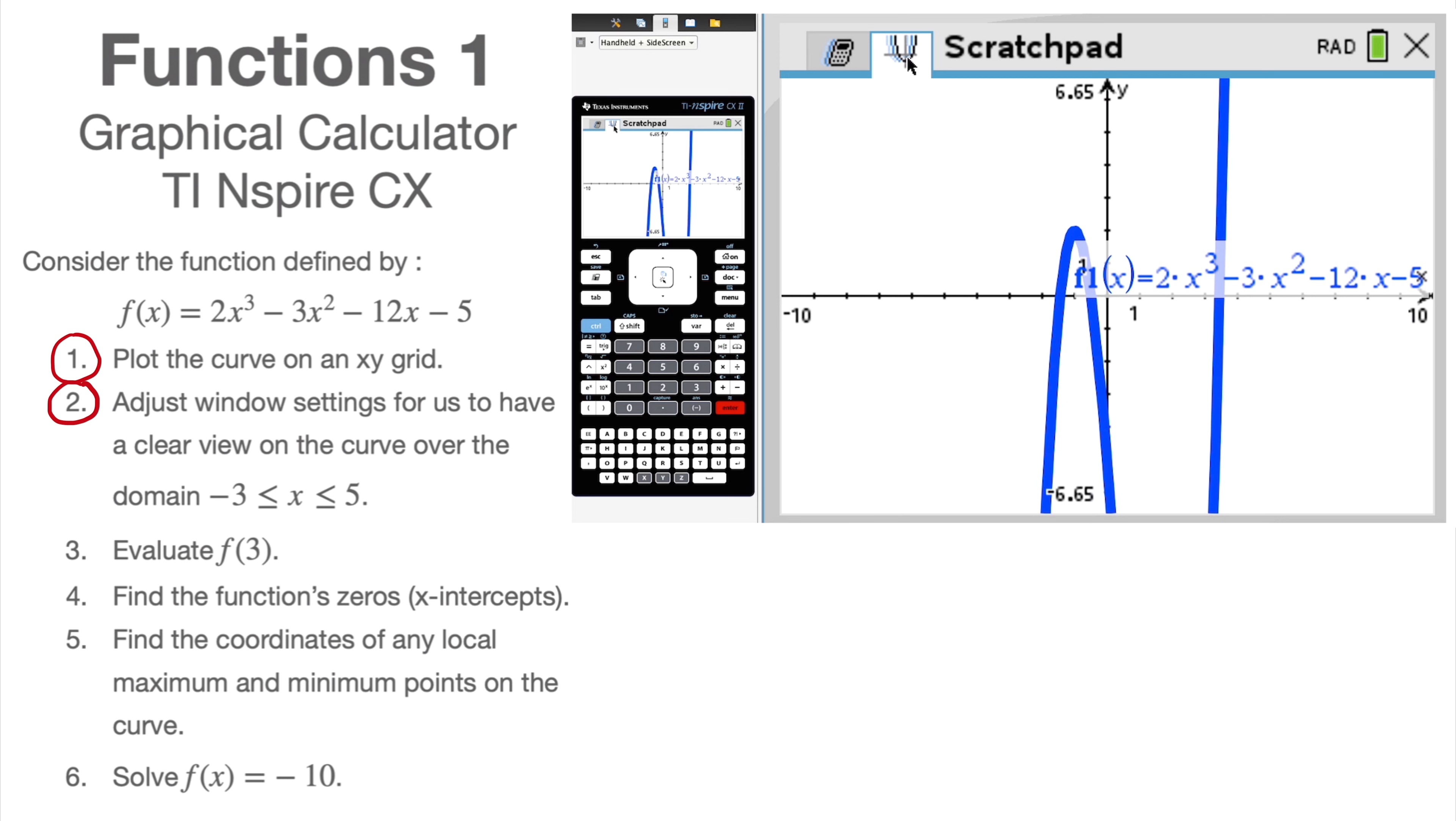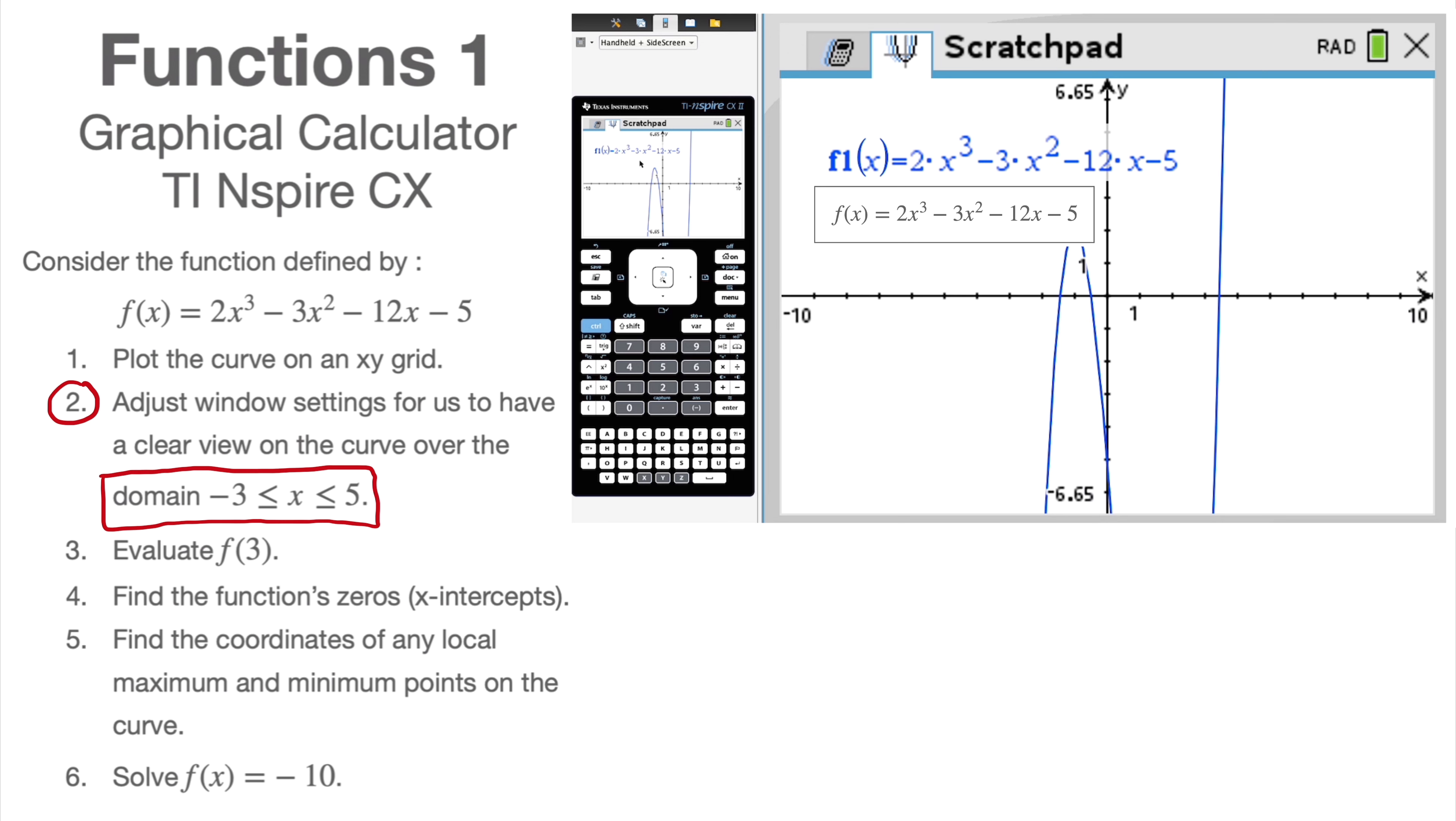Now when you first look at that, that's not particularly practical to work with. So one of the first things we need to do here, and as such I could say that what we've just done here is question one, plot the curve on the xy grid. But the second question I'm asking you here is adjust window settings for us to have a clear view on the curve over the domain for x between -3 and 5. Now before even doing that, I by default have the label of my function that appears when I plot the graph. I do this to make sure that I entered the equation properly. So I always check that I did 2x³ - 3x² - 12x - 5. That's what's on my worksheet, so I'm happy with that. Once I've checked though, I get rid of that. That just bugs me. It's in my way. So I literally click on it, and then I click on Delete.